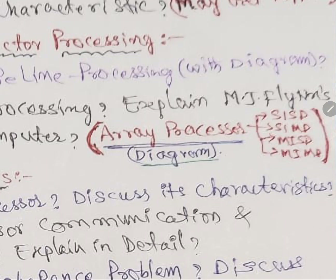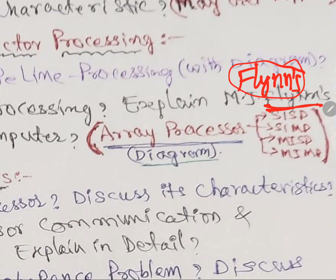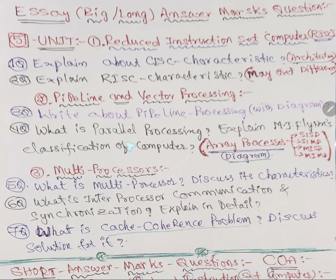This question was asked in March 2021, so there's a chance it may come again. Note that exact last-year questions often won't repeat, but questions from the year before that have a good chance. Flynn's classification is about array processors — the last topic in the fifth unit second chapter. The four types are SISD, MIMD, SIMD, MISD — very easy, and I have already shot that with a diagram.